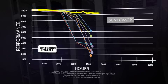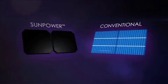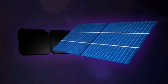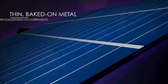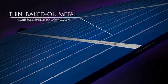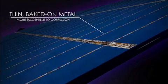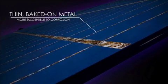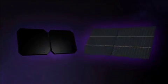Why? Cell design is key. Conventional cells use thin, baked-on metal for the electrical connections. In humid conditions, the thin metal corrodes and breaks electrical connections, resulting in power loss. SunPower, on the other hand,